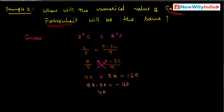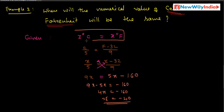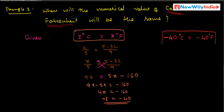Therefore x is equal to minus 160 divided by 4, which gives x equals minus 40. So at minus 40 degrees, both the Celsius scale and Fahrenheit scale give the same reading. In this condition, both scales are equal.